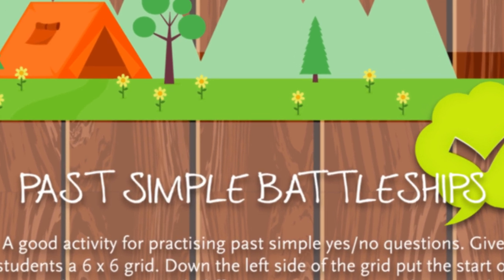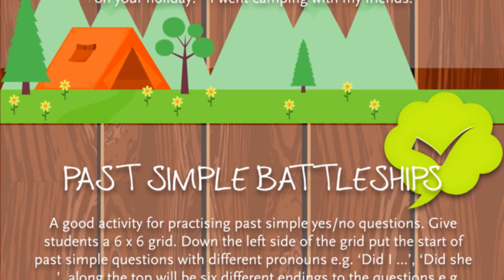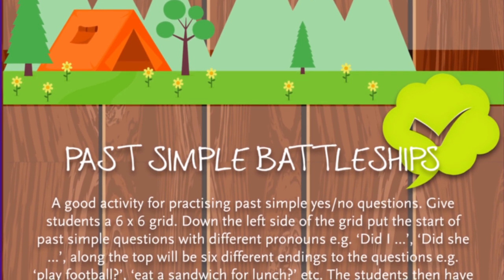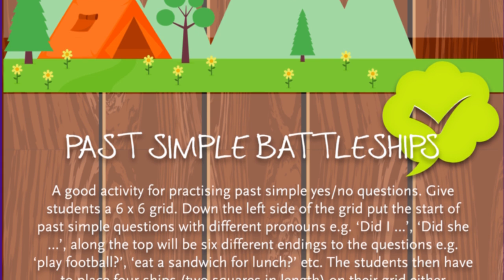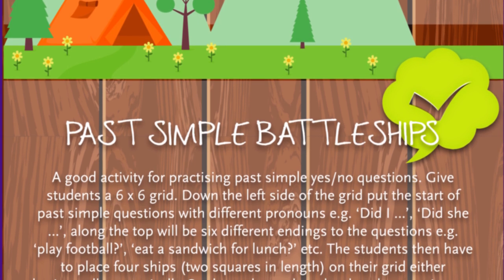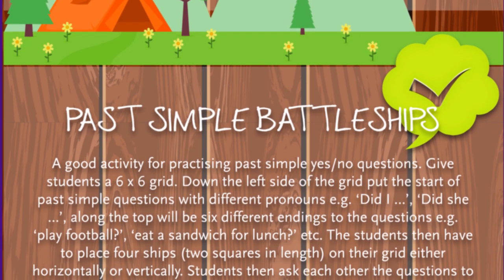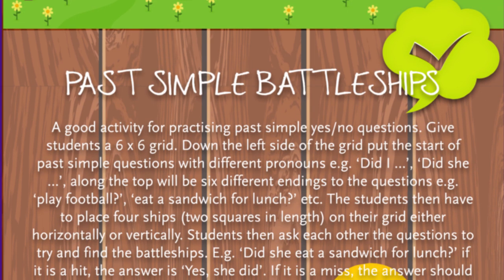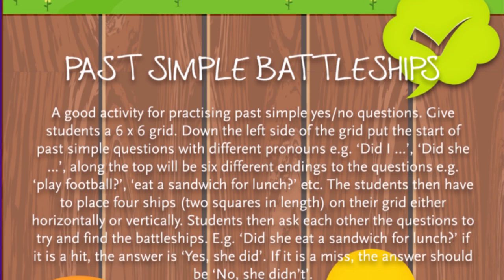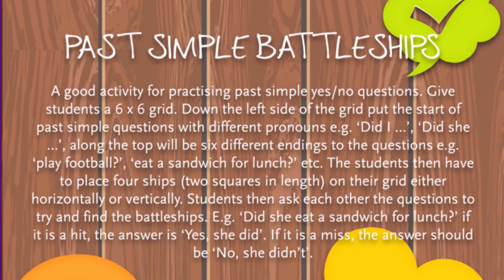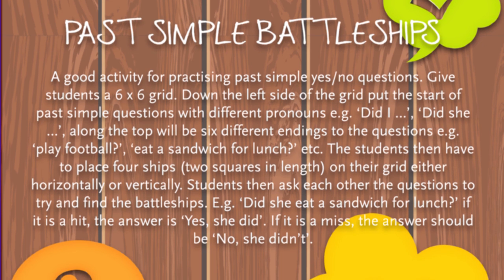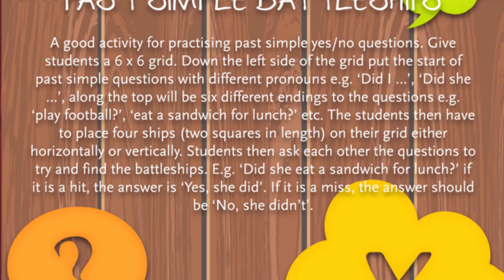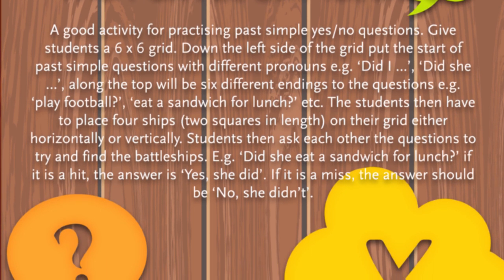Past Simple Battleships. A good activity for practicing past simple yes and no questions. Give students a 6x6 grid. Down the left side of the grid, put the start of past simple questions with different pronouns, for example: 'Did I…', 'Did she…', and so on. Along the top will be 6 different endings to the questions, for example: 'play football', 'eat a sandwich for lunch', and so on. The students then have to place 4 ships, 2 squares in length, on their grid, either horizontally or vertically.